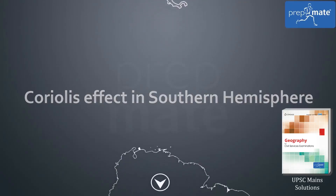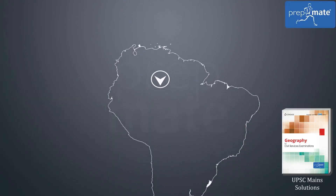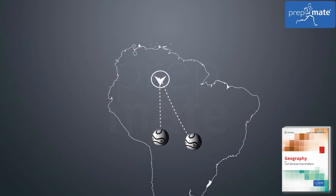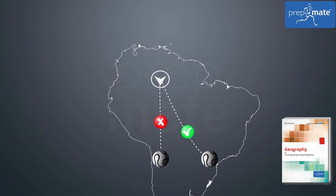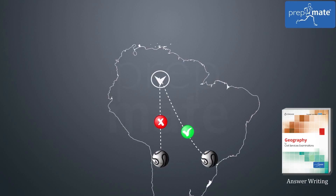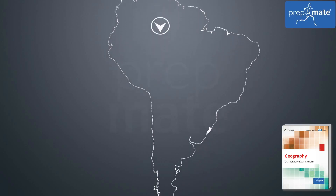Coriolis effect in the Southern Hemisphere. Say you are standing at the equator and you want to throw a ball to your friend in South America. Throwing the ball in a straight line, it will appear to land to the left of your friend, because your friend is rotating along with the Earth at a slower speed and the ball maintains its speed of rotation as it shifts from the equator towards your friend. When winds shift from equator towards poles, they will maintain their motion and thus will move ahead of the points on higher latitudes.